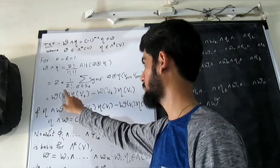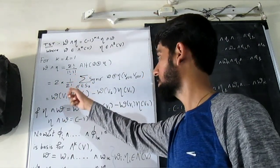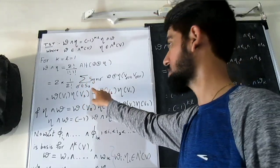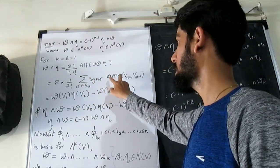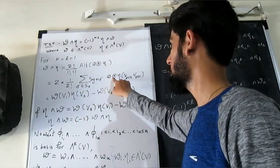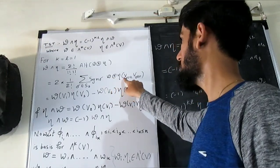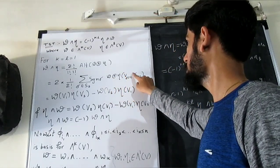That means we have to divide it by 2 factorial, then 2 into 1 by 2 factorial, summation sigma running over S2, sign of sigma, that thing that is omega tensor product with eta, v of sigma 1, v of sigma 2.